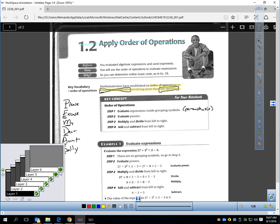What does that mean? It means exactly what you see here under key concept. P stands for parentheses. You should always, step one, evaluate expressions inside grouping symbols. So if there's parentheses in the problem, you've got to do what's in the parentheses first.